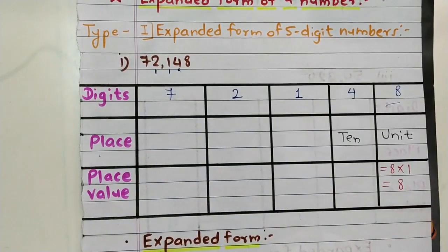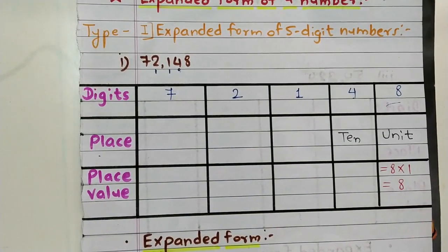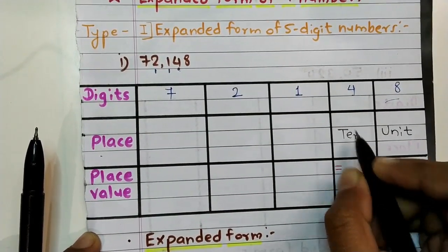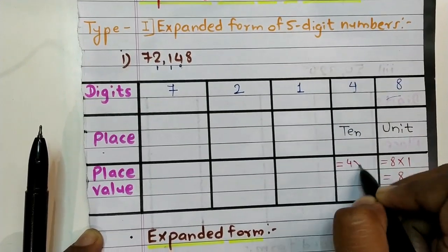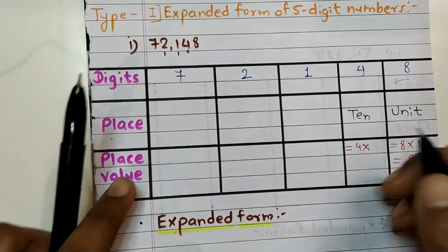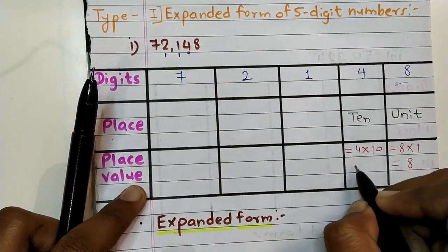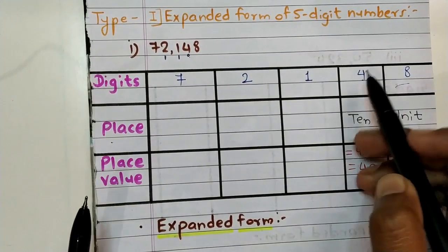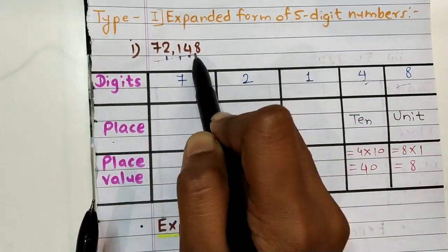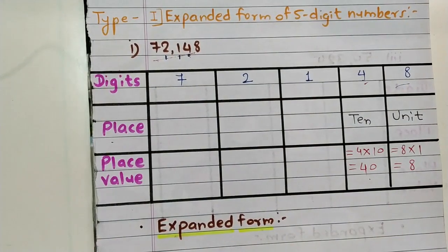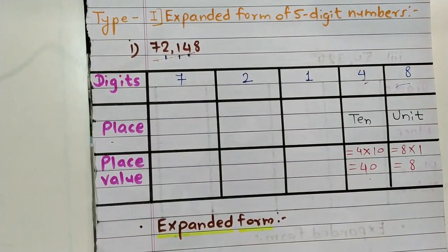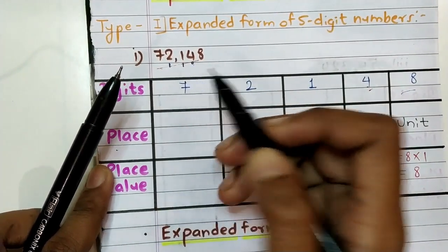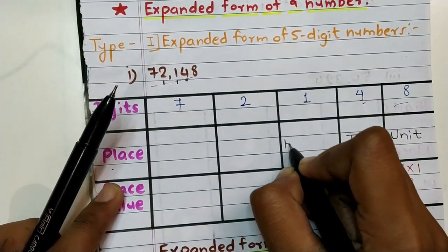Place value of four equals four into ten, which is equal to forty. Then place of one — here one is at hundreds place, so here we write hundred.